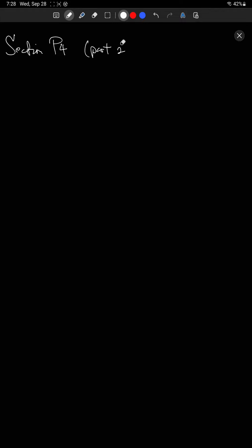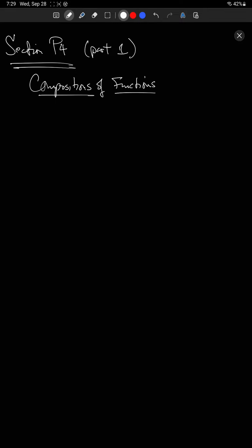This is going to be section P4 of the book, and this is just part one. We're going to be breaking this section up into two parts, and after we finish the second part, the week after that, we should be actually using it in the trig class. So this one's about compositions of functions. It's going to be relatively short, but it's ridiculously important to understand this concept, especially if you're going to be taking some sort of calculus in the future.